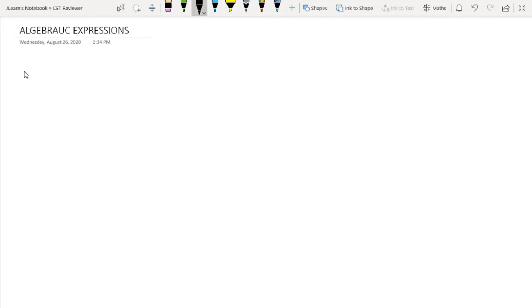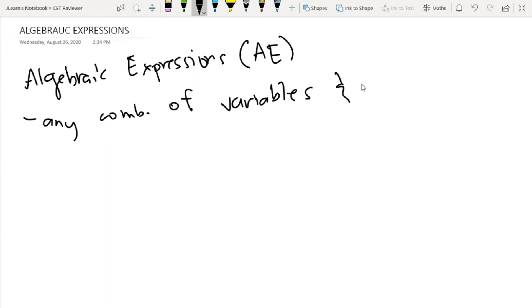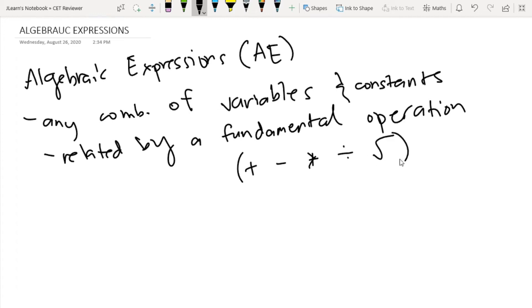So algebraic expressions, or we can abbreviate them by AE, basically any combination of variables - so a variable can be any letter or any word - and constants. Then kailangan related sila, related by a fundamental operation.